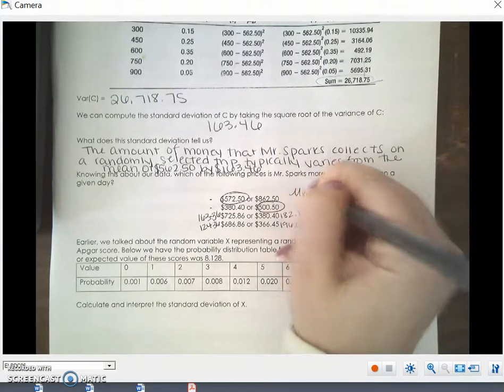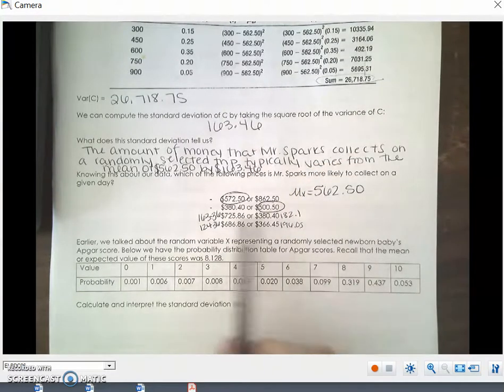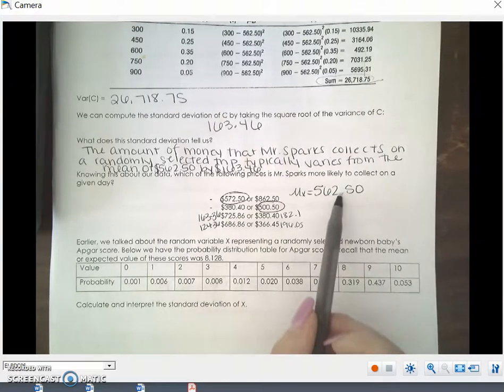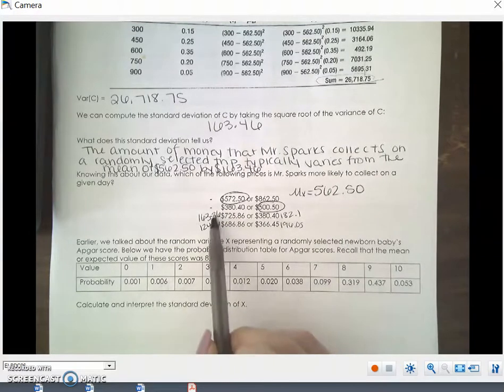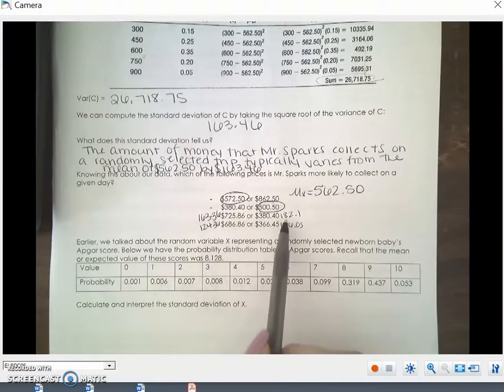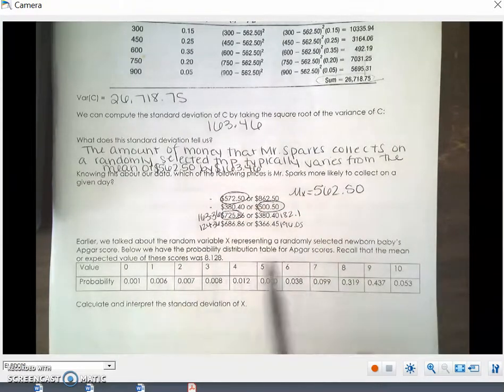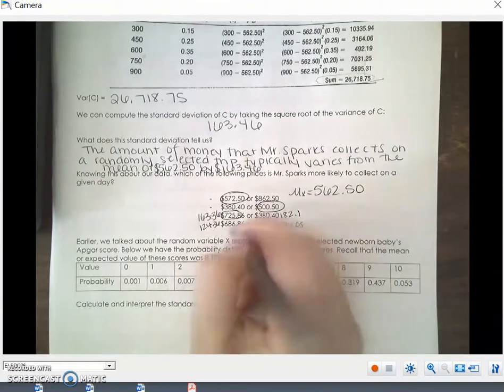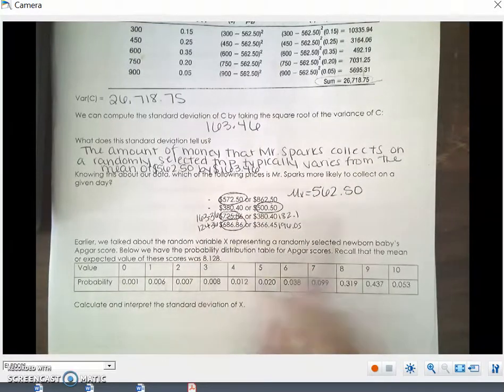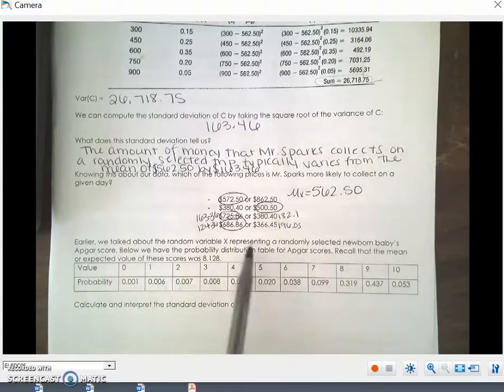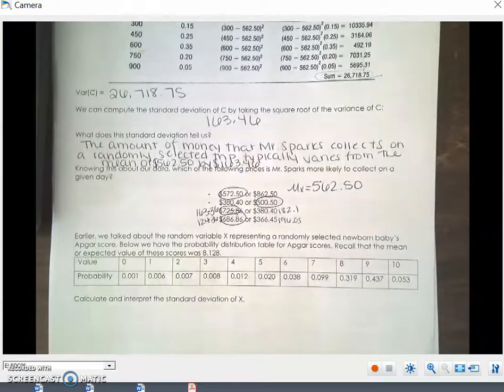Remember our mu of x was 562.50. So the difference between 525.86 and 562.50 is 163.36. I did the same thing over here and got 182.1. Because this one is closer, that would be more expected. I did the same thing down here because 686.86 is closer to our expected value, that would be more likely to occur.